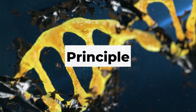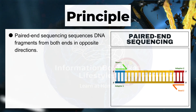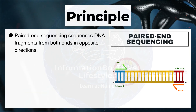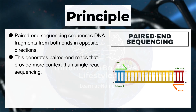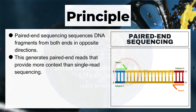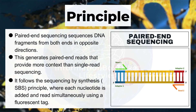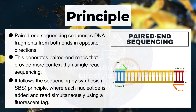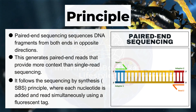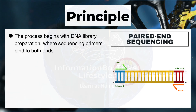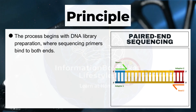Paired end sequencing sequences DNA fragments from both ends in opposite directions, generating paired-end reads that provide more context than single read sequencing. It follows the sequencing by synthesis (SBS) principle, where each nucleotide is added and read simultaneously using a fluorescent tag. The process begins with DNA library preparation, where sequencing primers bind to both ends.